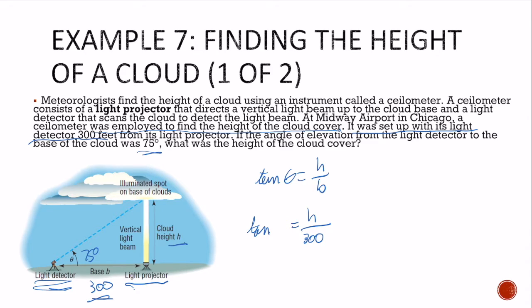So 300 tan of 75 degrees equals h. So h is 11,196, so about 12,000 feet, because we were told we were measuring in feet because we were 300 feet apart.